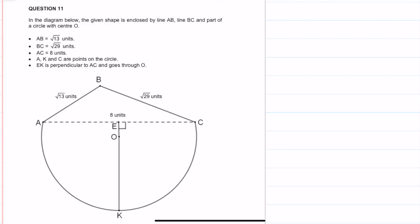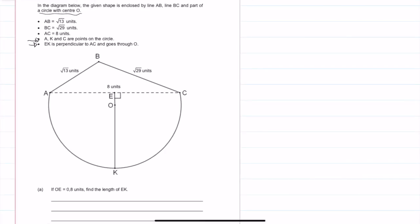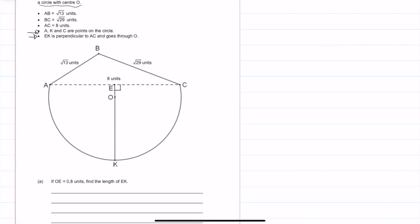Welcome to this video tutorial. We are going over the 2018 IEB Maths Paper 2, doing question 11. We've been given a diagram where most of the information is provided. Key points are that A, K, and C are on the circle, and EK is perpendicular to AC, passing through point O, where O is the center of the circle. Part A asks us to find the length of EK, given that OE equals 0.8 units.